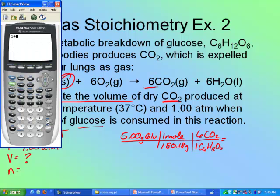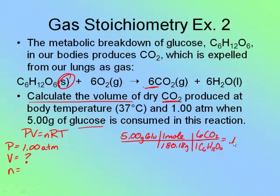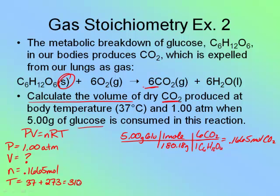5 times 6 is 30, divided by 180.18, giving 0.1665 moles of carbon dioxide. That's the number that goes into PV = NRT for N. The temperature is 37 degrees Celsius plus 273, which is 310 Kelvin — I'll add a decimal to indicate three significant figures.